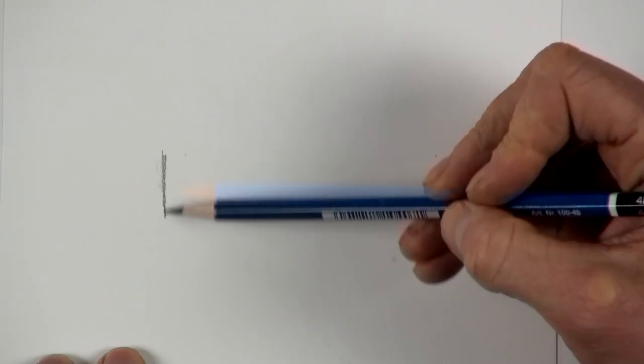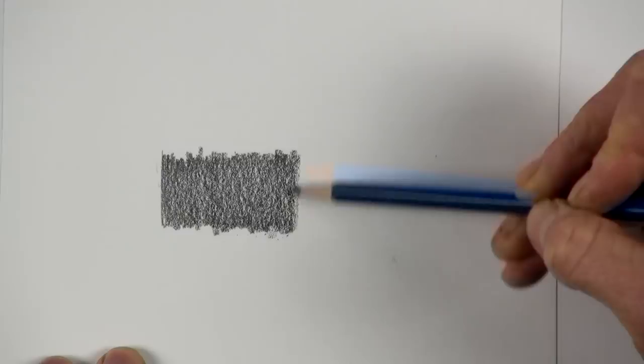If I lay down some lighter graphite without using too much pressure, and this would represent some of the lighter values in your drawing, and then I try to increase the value with either a charcoal or a carbon pencil on top, you can see that nothing happens.